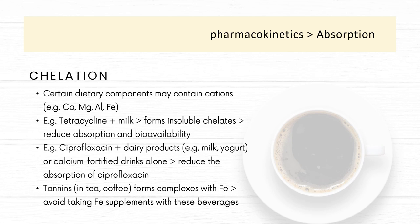Another mechanism is through chelation, in which some dietary components might contain cations, for example calcium, magnesium, aluminium, or ferrous. For example, tetracycline given together with milk might form insoluble chelates and reduce absorption and bioavailability of tetracycline. Ciprofloxacin given together with milk, yogurt, or calcium-fortified drinks might also reduce the absorption of ciprofloxacin. Tannins in tea or coffee might form complexes with ferrous, so those taking ferrous supplements should not take them together with tea or coffee.